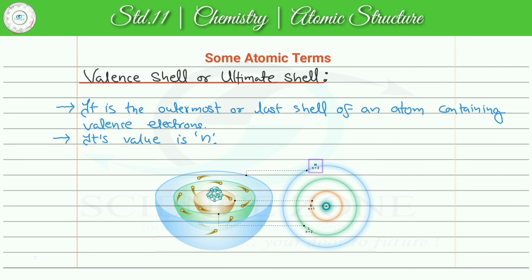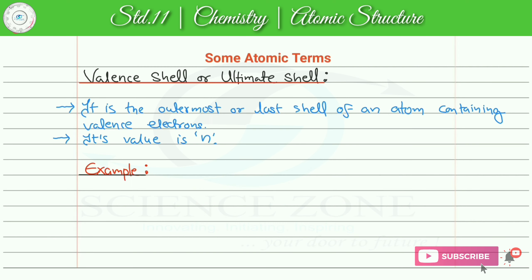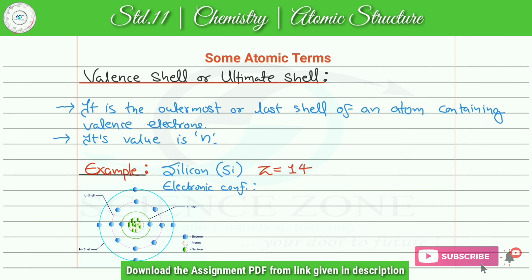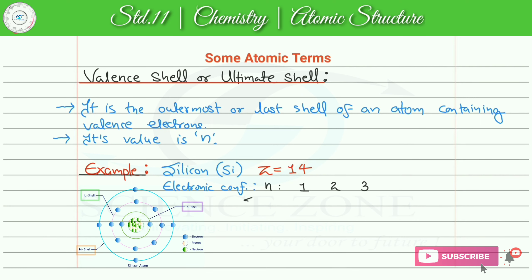इसको represent करने के लिए हम symbol n use करेंगे, and n की value represents ultimate or valence shell. अब यहां पे एक element select कर रहा हूं, that is silicon. Silicon का atomic number कितना होता है? It is 14. इसका electronic configuration यहां पे show करना है। Silicon में three shells होते हैं।